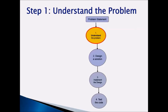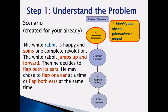Step 1 is understand the problem. When we talk about understanding the problem, always know what the scenario is. The White Rabbit is happy and spins one complete revolution. The White Rabbit jumps up and forward, then decides to flap both its ears — one at a time or both at the same time. We need to identify the objects: we have our White Rabbit, and the props in our scene are the wall and the bushes.